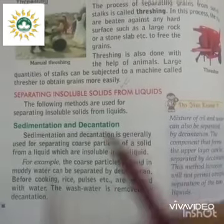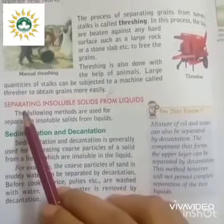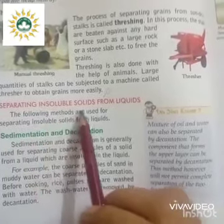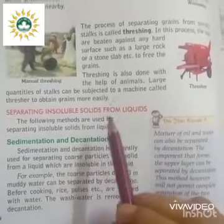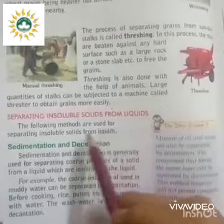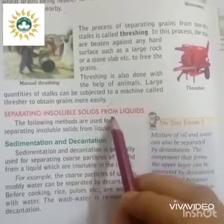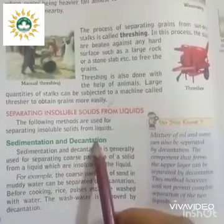We will start with the explanation part and then finish it off with question answers in the next week. The portion we will start with is separation of insoluble solids from liquids. We will see how some insoluble solids are separated from liquid, and the methods are sedimentation and decantation.